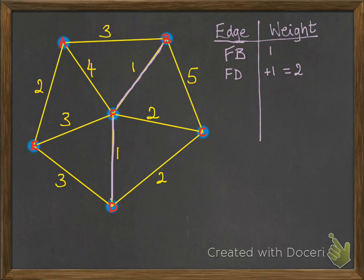Next one is FD with another weight of 1, so that gives us a total of 2 so far. The next one to pick is a 2. You can see there are three 2s. Again, it doesn't matter which one you pick. In fact, you can have different trees come out of it, but it still is a correct answer. We'll pick this C to D edge first and add in that 2, and it's got a 4.